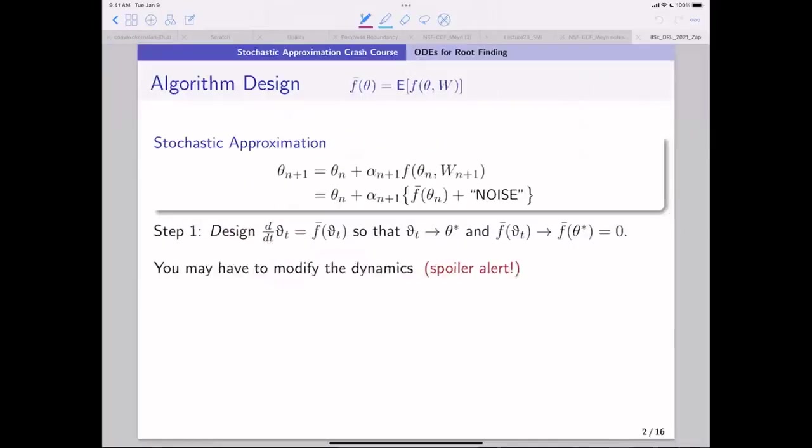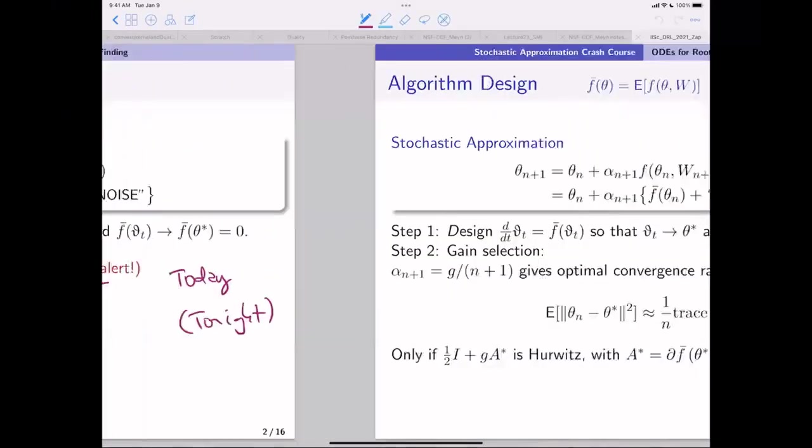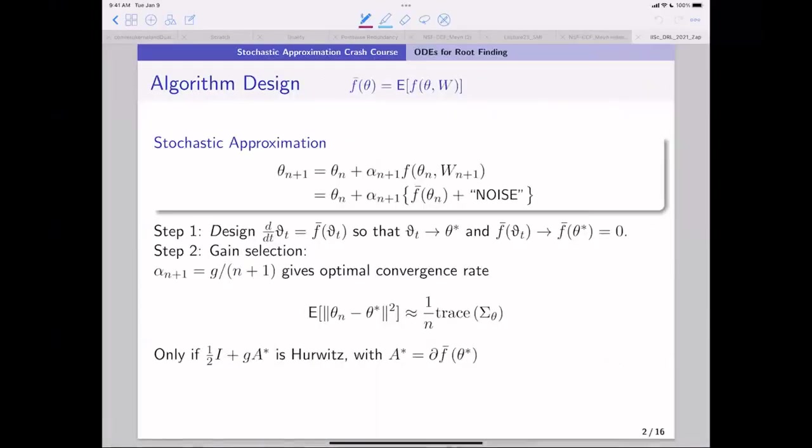And then you have to modify dynamics and spoiler alert. That's what the entire lecture is about is one approach. I'm going to go into depth in about modifying dynamics to ensure stability and faster convergence. And I'll hint at other methods, but I'll focus on one. And then there's an issue of gain selection. Here's a really subtle point. One standard gain selection.